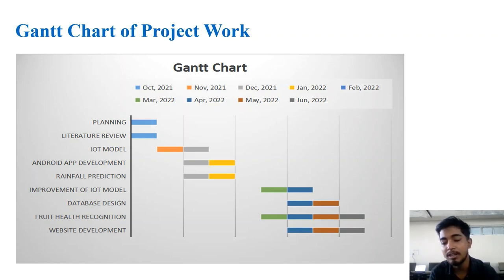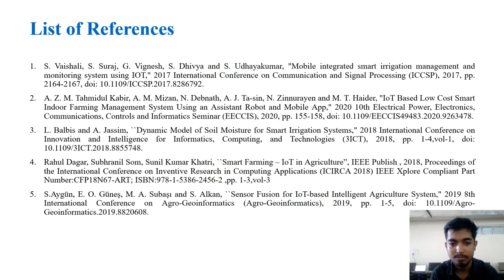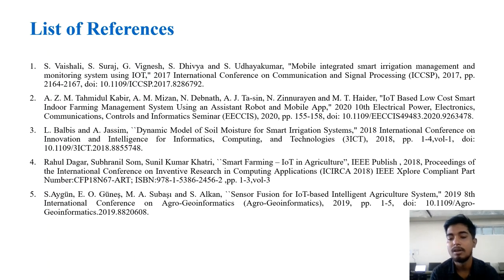The Gantt chart of the project work depicts how we planned and developed the project, including the literature review, database design, and other components. The list of references used throughout the project is also provided.